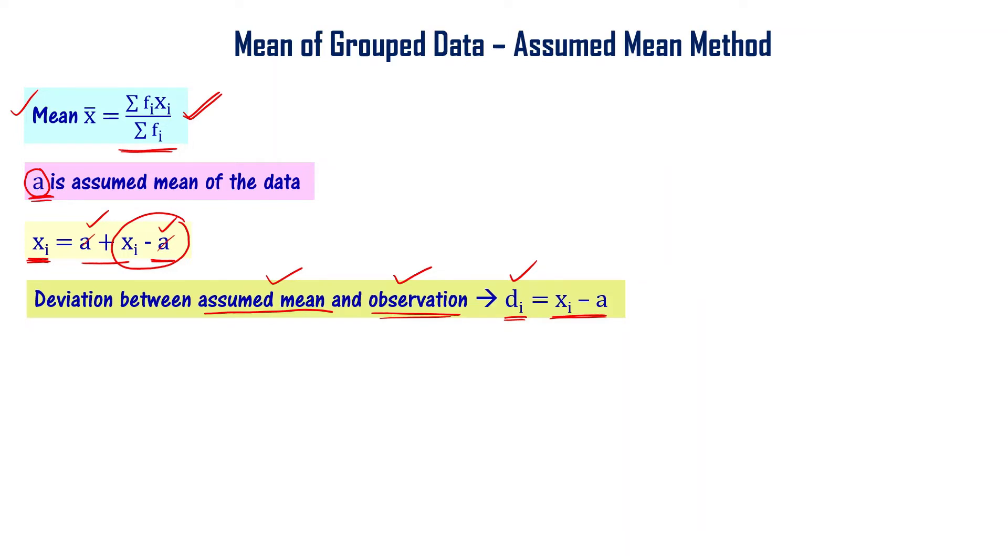I can write xi = a + di. Now, in the mean formula, wherever xi appears, I'll substitute a + di. So x̄ = Σfi(a + di) / Σfi. This becomes (Σfi·a + Σfi·di) / Σfi, which can be written as (a·Σfi / Σfi) + (Σfi·di / Σfi).